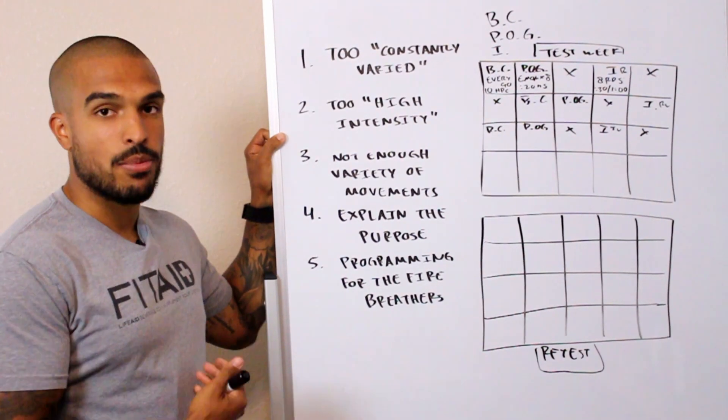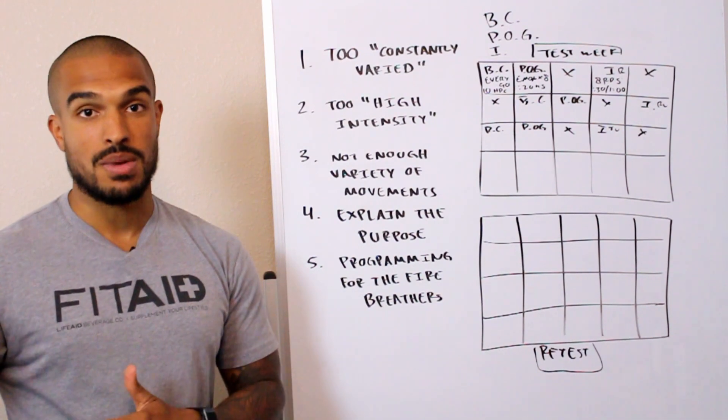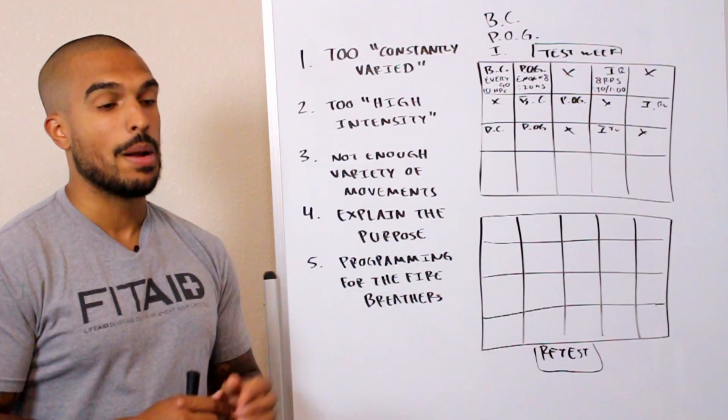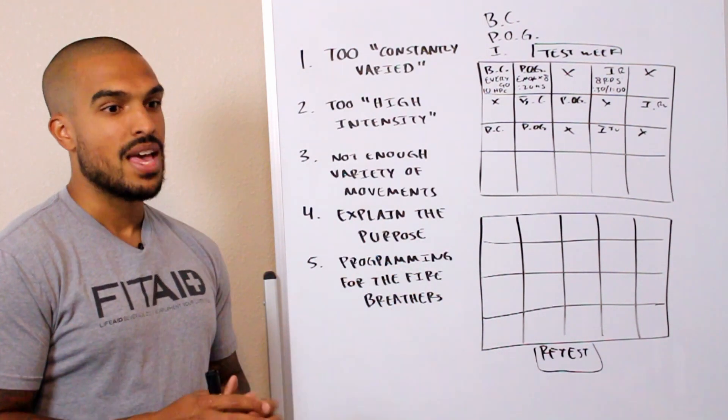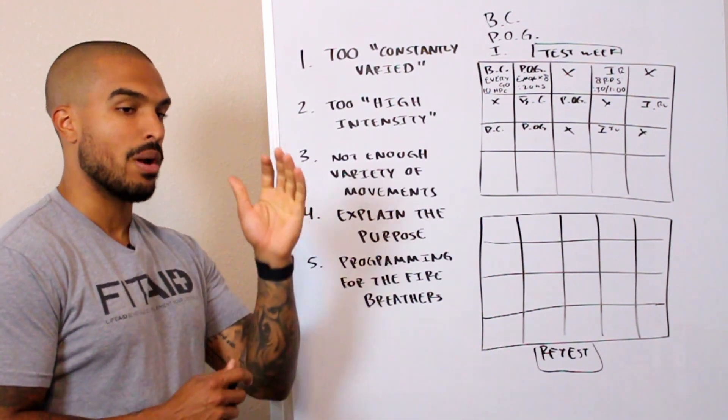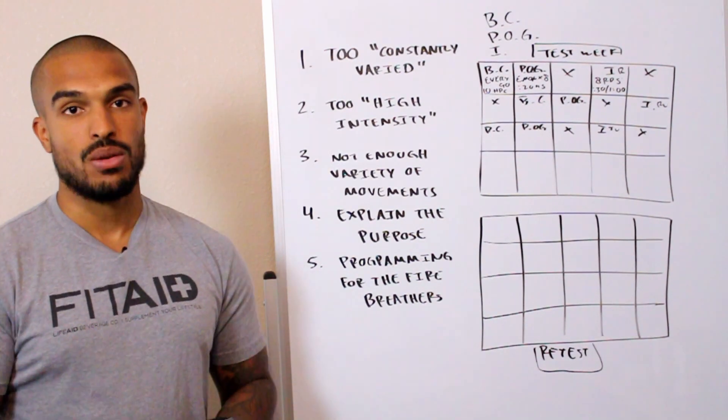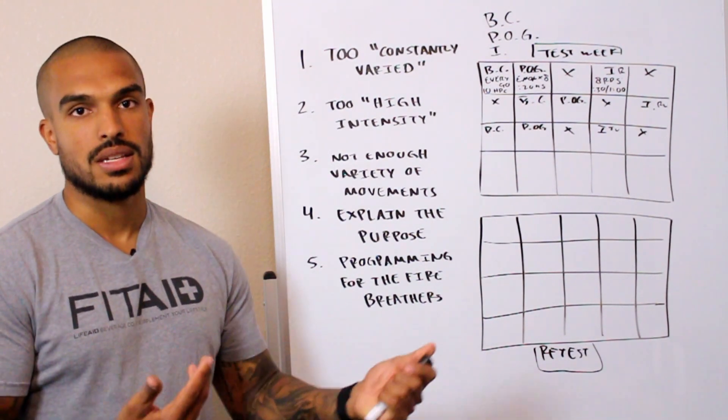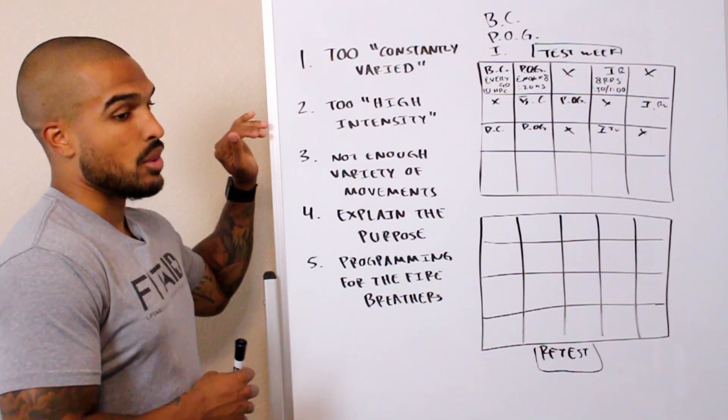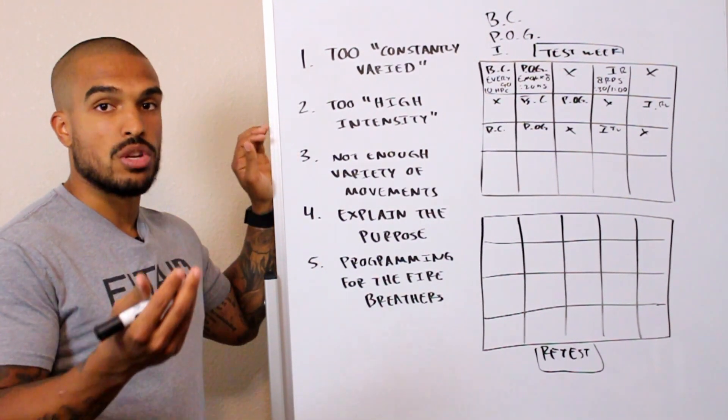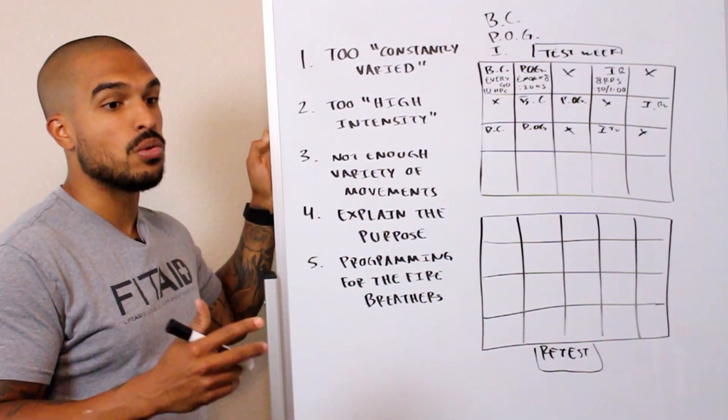With my programming I like to program at least one longer conditioning piece, anywhere from like 25 plus minutes of a workout once a week. We'll program around a 20 minuter and then I'll program maybe some short ones, but short ones that aren't super crazy. I won't program a six-minute AMRAP and have it have 205 pound cleans where people have to sprint. I might program a short minute AMRAP and it might be double unders and pull-ups, so it's a little less dynamic, a little lower impact, and it'll save more of their joints.